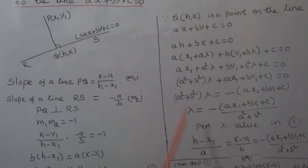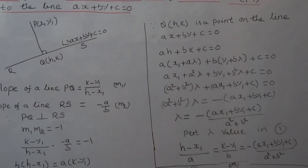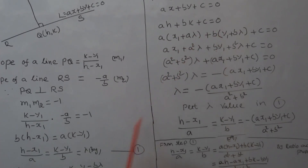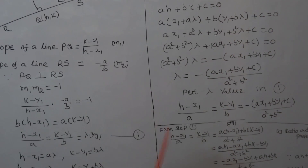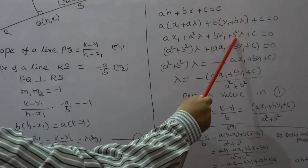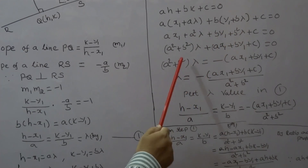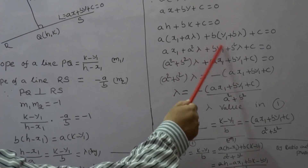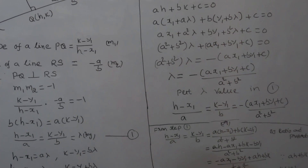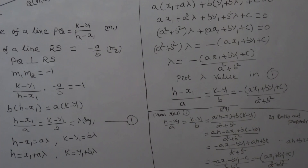Since point Q(H, K) lies on the line AX + BY + C = 0, substituting gives AH + BK + C = 0. Substituting H = X1 + A·lambda and K = Y1 + B·lambda: A(X1 + A·lambda) + B(Y1 + B·lambda) + C = 0, which gives AX1 + A²·lambda + BY1 + B²·lambda + C = 0. Taking lambda as a common factor: (A² + B²)·lambda + (AX1 + BY1 + C) = 0. Therefore lambda = -(AX1 + BY1 + C) / (A² + B²).